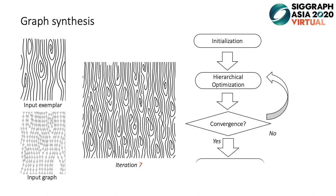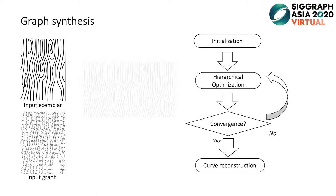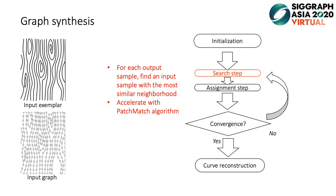After synthesis, the vector curves are reconstructed from the output graph. The optimization is performed by alternating search and assignment steps.